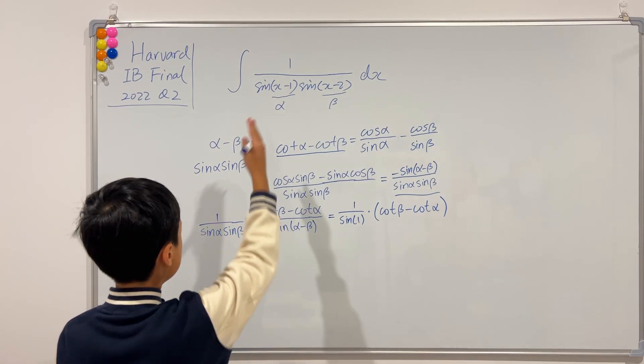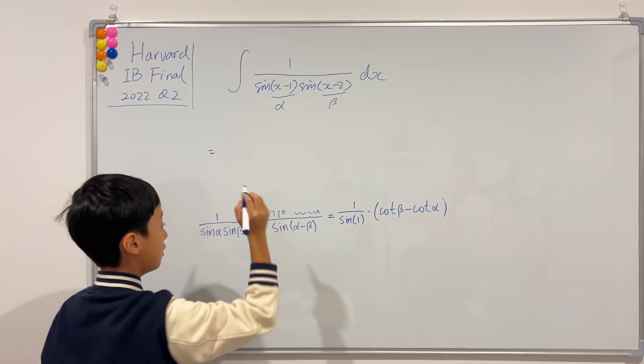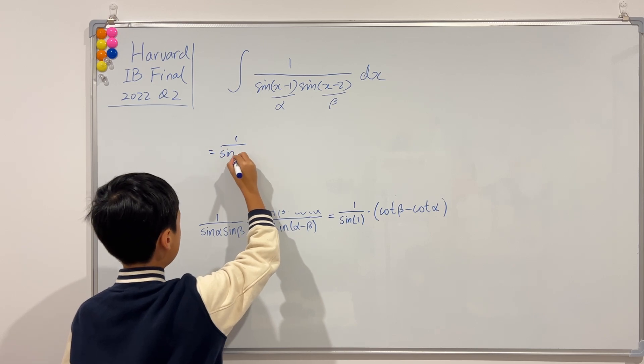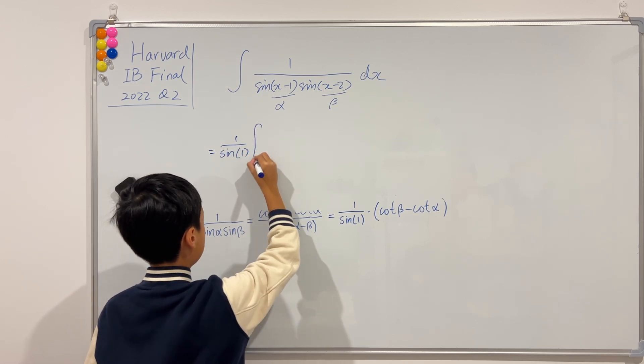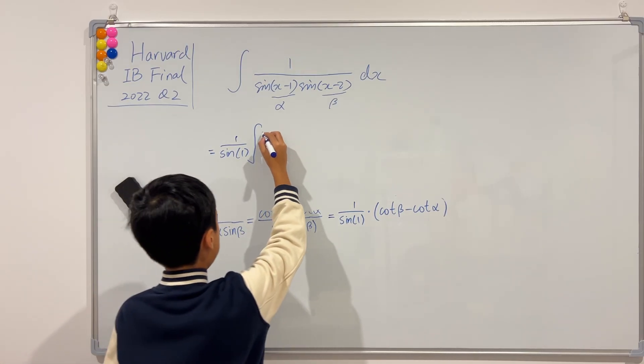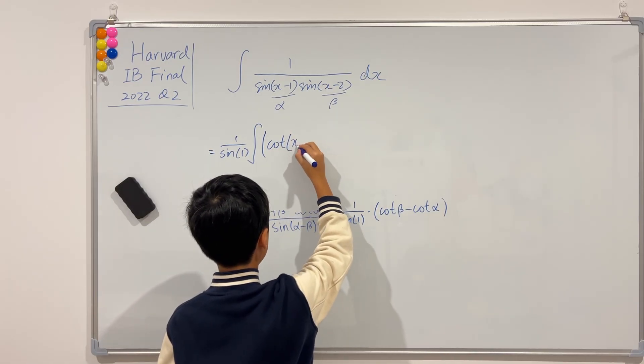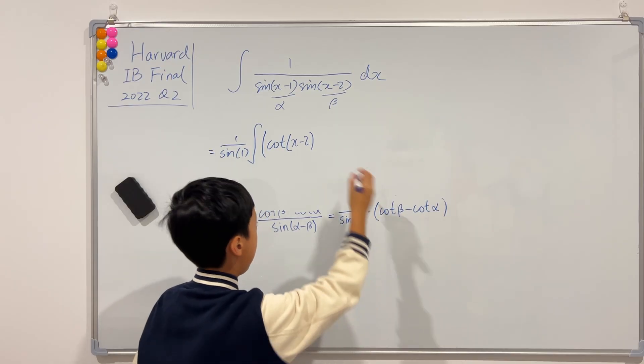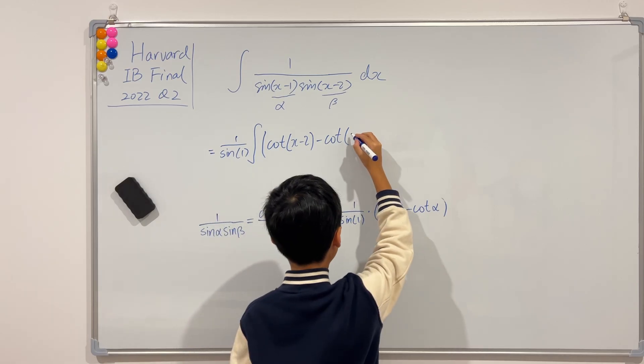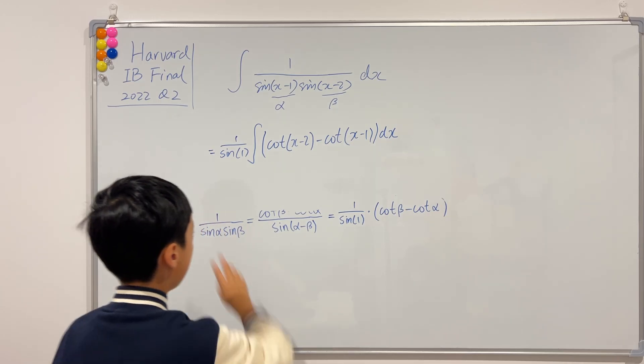Now, we can replace this into that integral. So, we will get, we can take this out since it's a constant. And then, I'll also put back the beta and alpha. So, it'll be cotangent of beta, which is x minus 2, and then, minus cotangent of alpha, which is x minus 1.